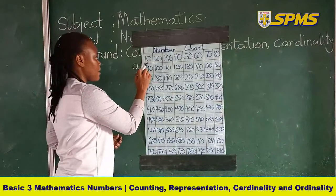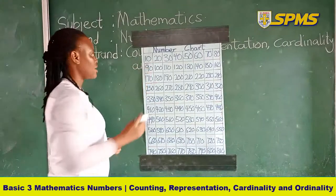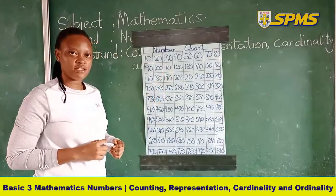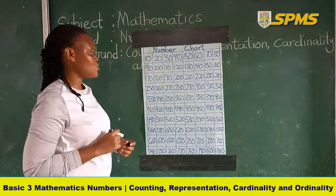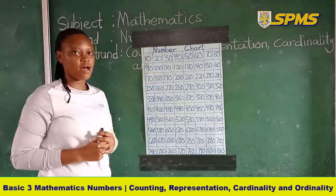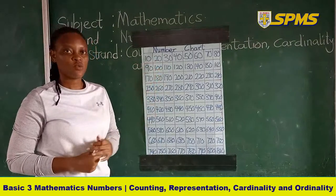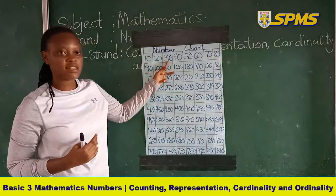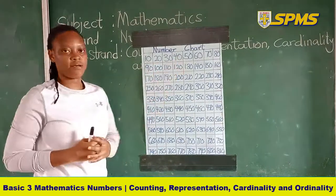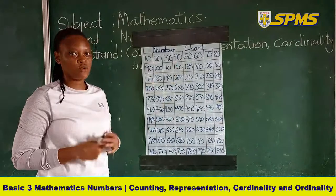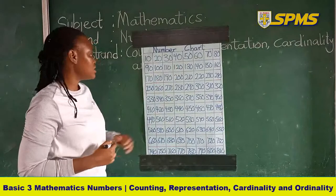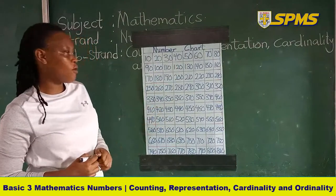Look at the first number — we have 10. Our second number, 20. The third one, 30. So we are skip counting in 10s. We added 10 to the first number to get 20, then another 10 to 20 to get 30, and so on. We remember from our previous lesson we spoke about skip counting. Our number chart is in the form of 10s.